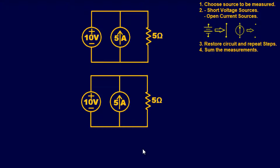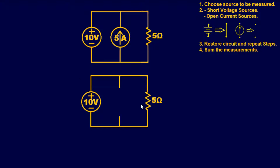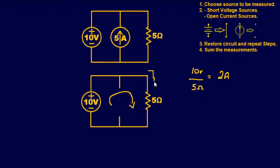Step two states: short the voltage sources and open the current sources not being measured. Since I'm using the 10-volt power supply, I leave it alone and open the current source. Current will flow through the 5-ohm resistor, and using simple Ohm's Law: 10 volts over 5 ohms gives us 2 amps. So for the first source, we have 2 amps flowing downward through the 5-ohm resistor.